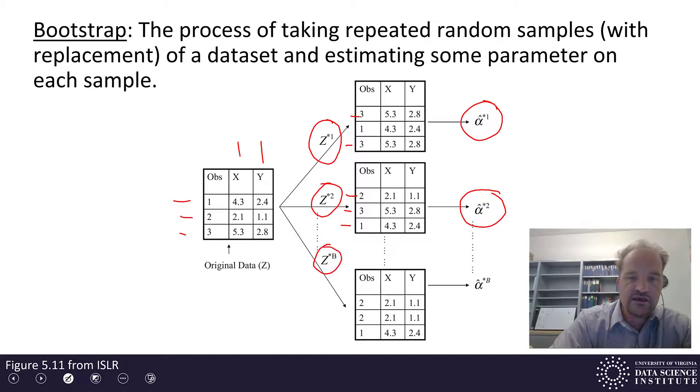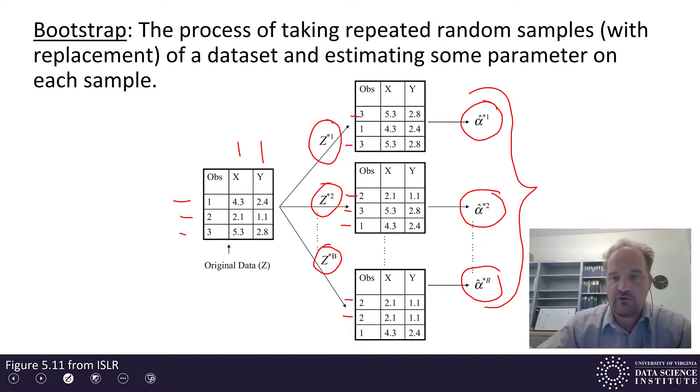and we do this capital B times, each time getting some random sample with replacement. Notice there's two 2s in this sample, and that gives us this sequence of estimates of alpha, and then from that sequence of estimates of alpha, we can understand the robustness or the variation that can happen among the estimates of alpha.